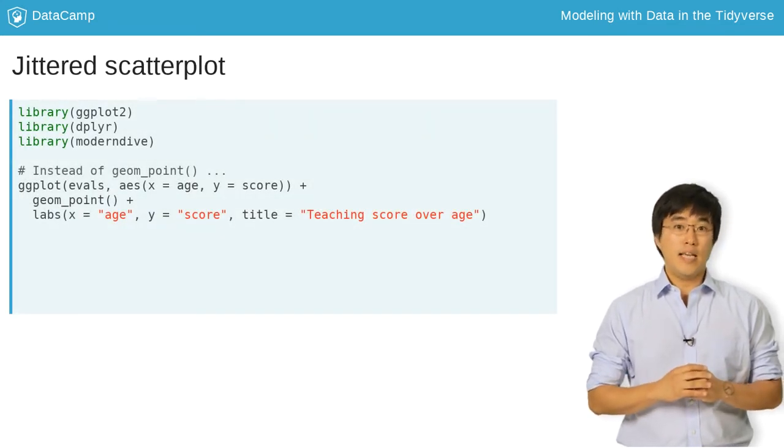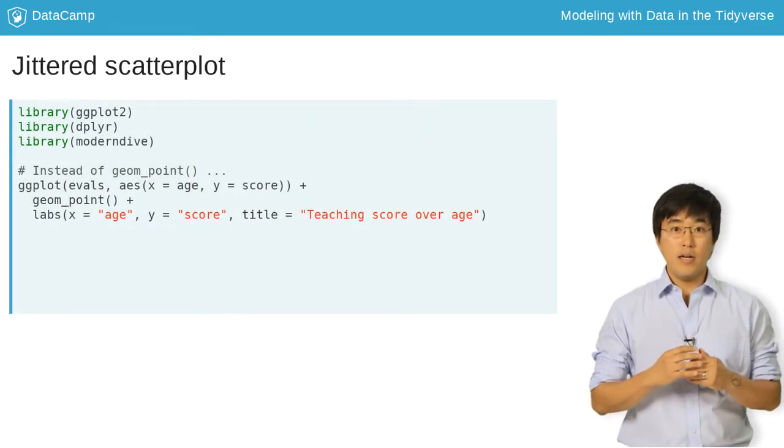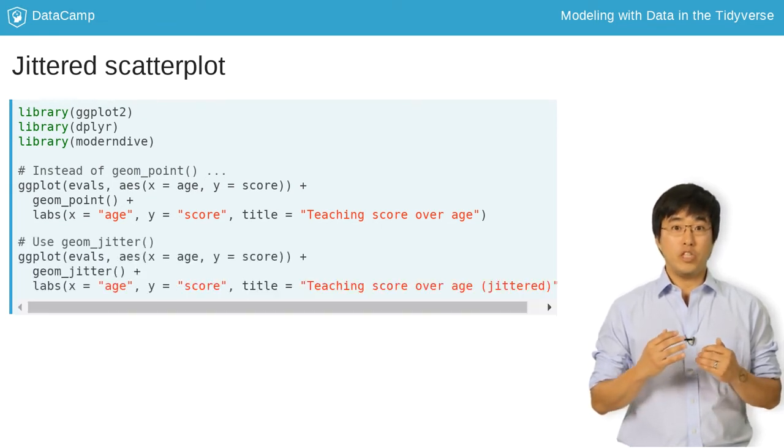This is done by taking the same code that generated the scatter plot and replacing the geom_point with a geom_jitter.